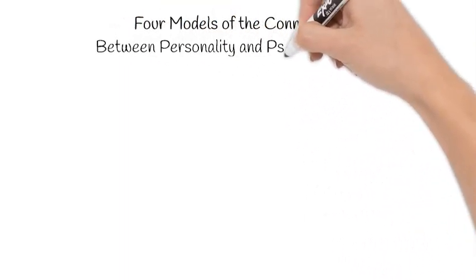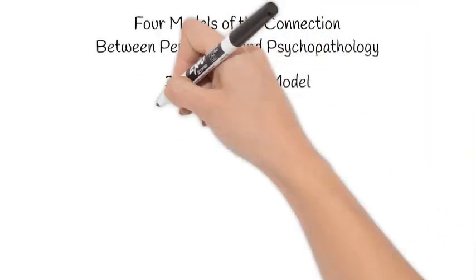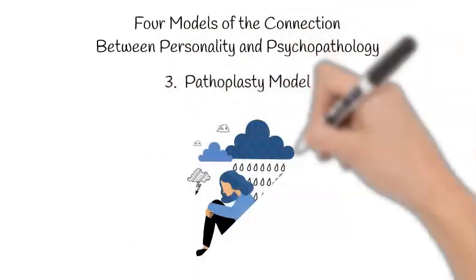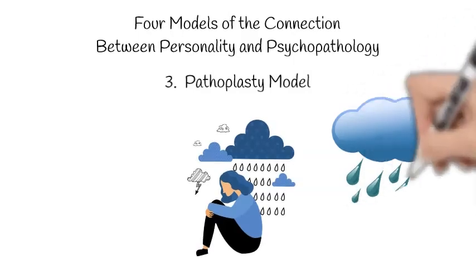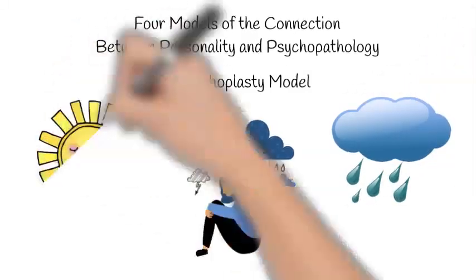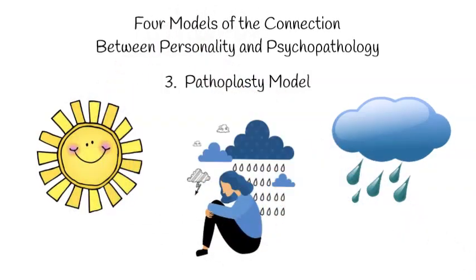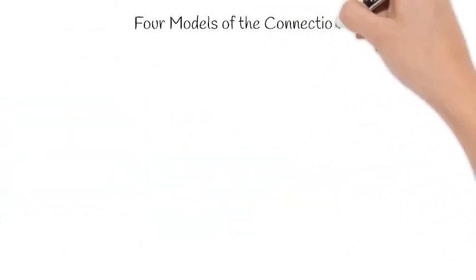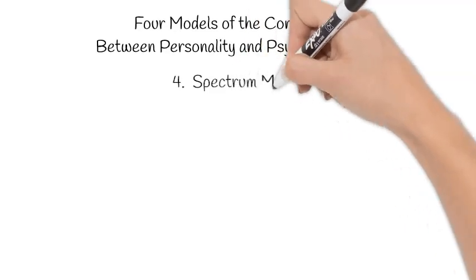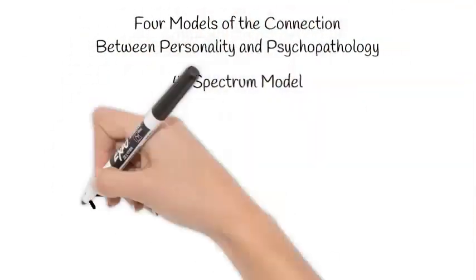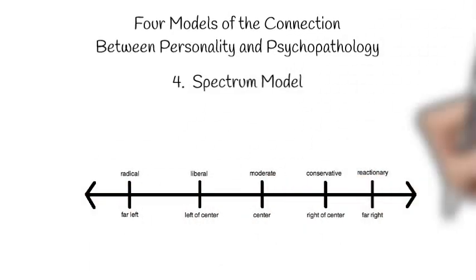The third model of the connection between personality and psychopathology is the pathoplasty model, also called the exacerbation model. This model states that personality influences the manifestation of a later disorder rather than having a causal role in the disorder. In essence, the personality either worsens or improves the outcome of a disorder, but it does not cause it. The last model, called the spectrum model, suggests that personality and psychopathology are both part of the same continuous latent dimension of personality. An example of this are the schizophrenia spectrum of disorders that are said to lie along a continuum and are differing manifestations with the same underlying cause.